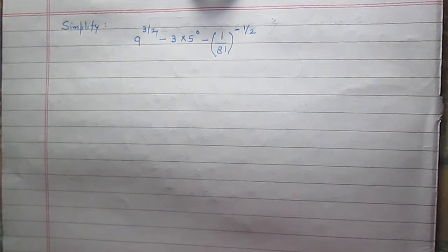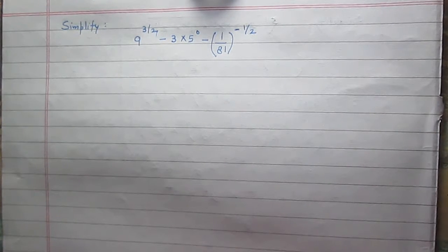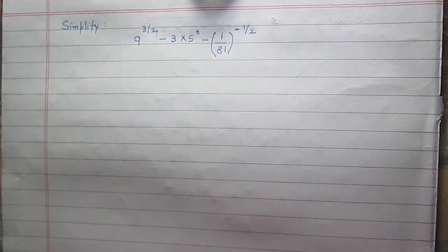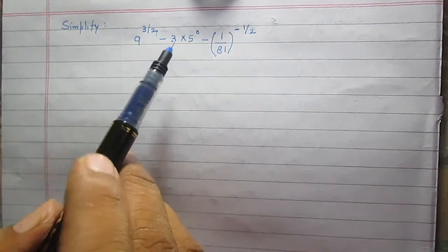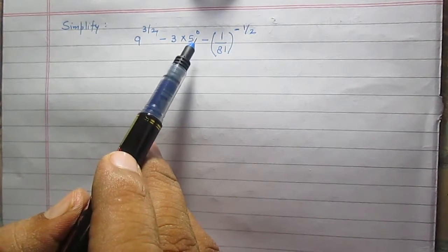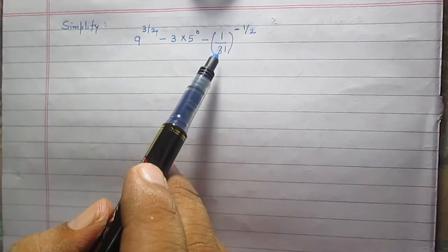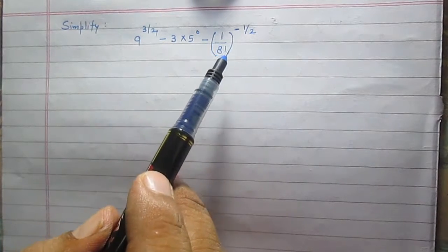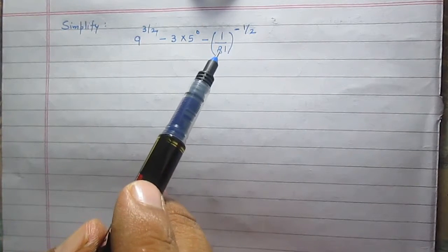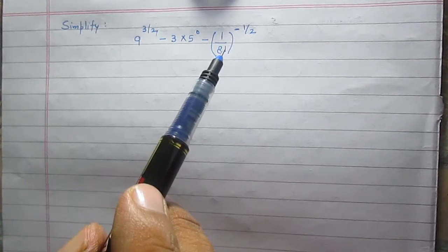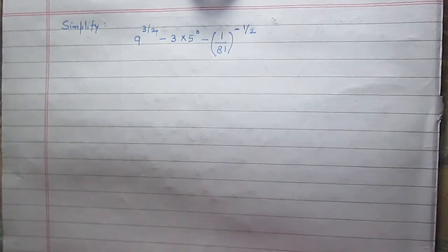Simplify 9 raised to the power 3 by 2, minus 3 multiplied by 5 raised to the power 0, then minus 1 upon 21 raised to the power minus 1 by 2.